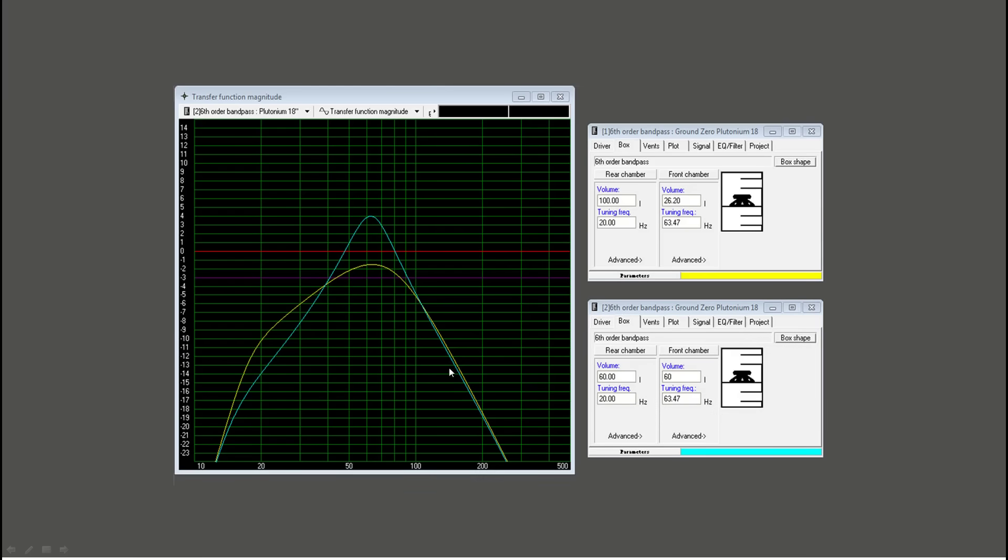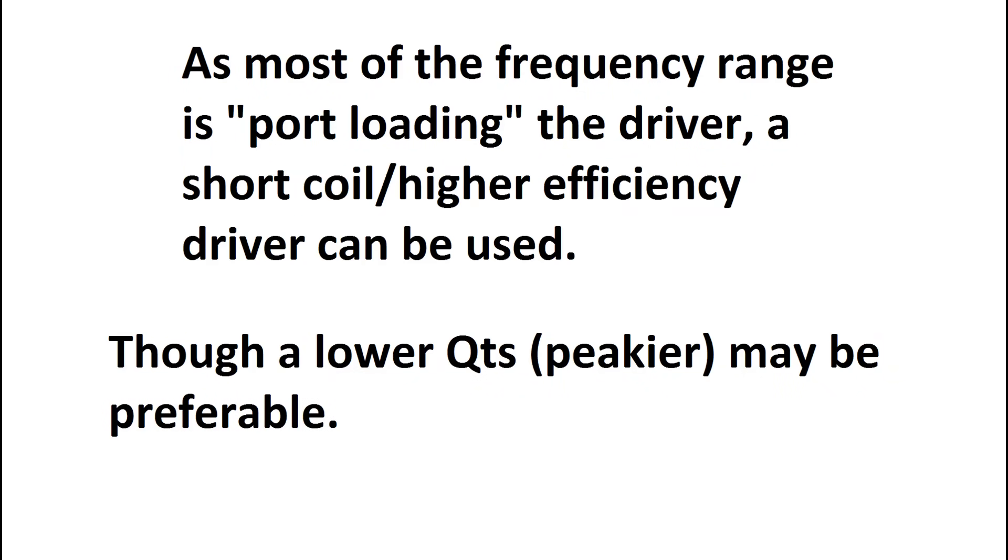And that's why it's preferable. But in cars once again if you're trying to make a build which not only does low frequency but also high frequency range, as most of frequency range of a sixth order is being port loaded the driver doesn't need to be high excursion. It doesn't need to be as inefficient. You can use an efficient driver to make great frequency response. Low QTS is often preferred to the high QTS speaker for sixth order. So that's another determining factor. If you've already got the sub if it's got high QTS you're better off putting it into a fourth order.